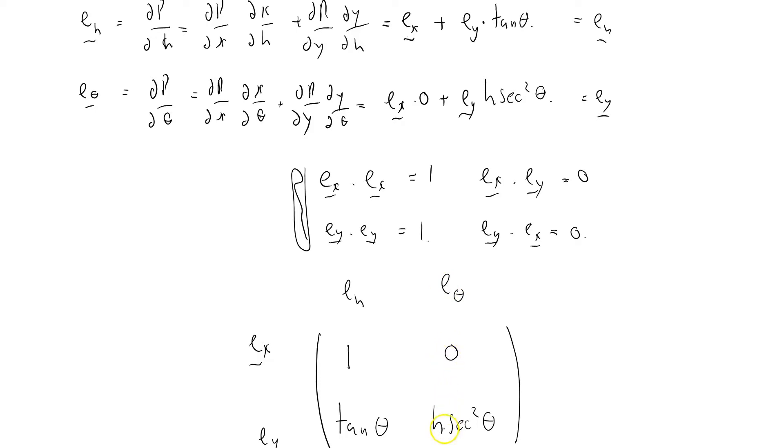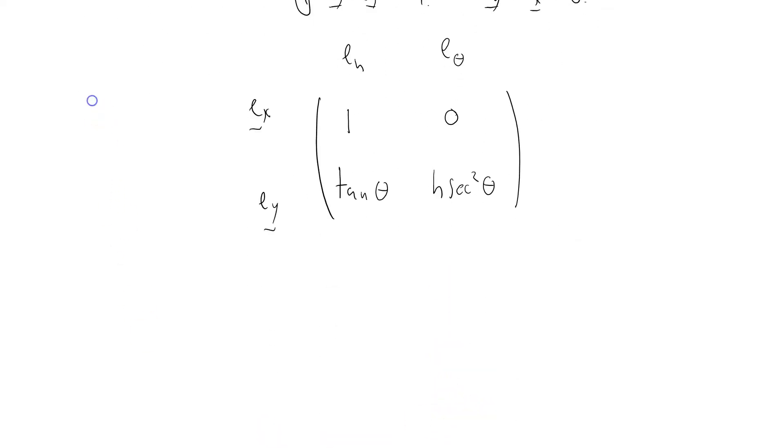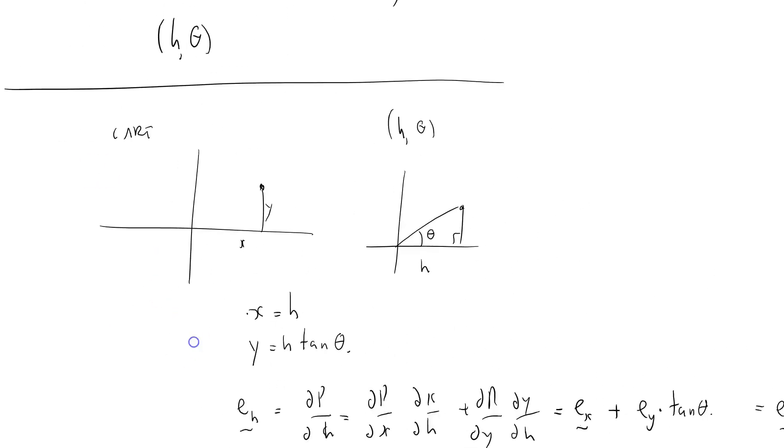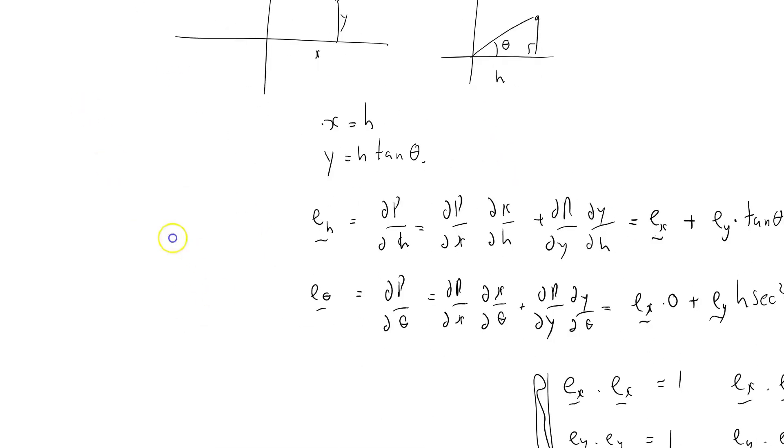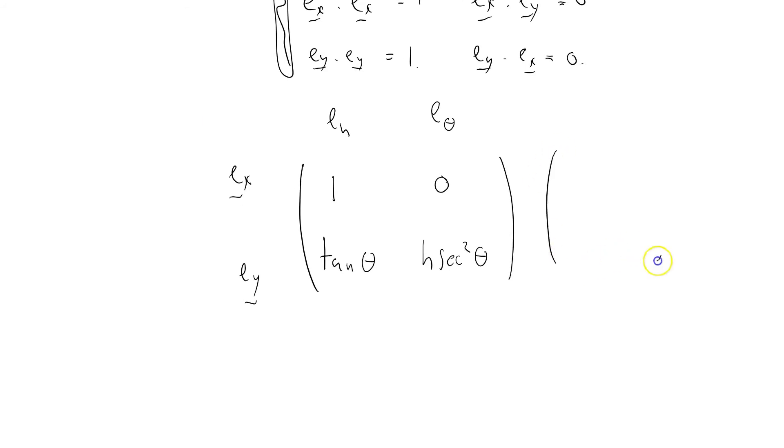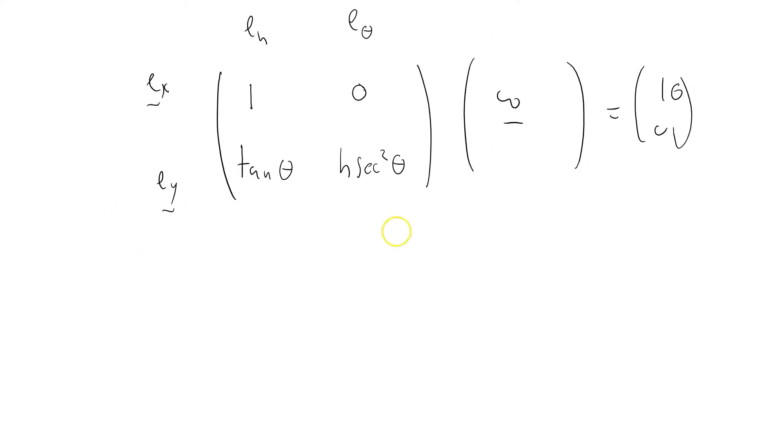Now, because of this relationship here about multiplying the e's by the omegas, you can see that when I take a matrix product of the E matrix, which is this one here, with the omega matrix, which is this one here, I'm going to get the identity. So I need to invert this matrix.